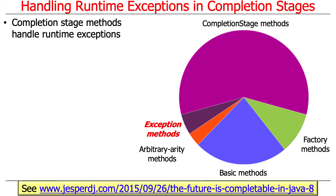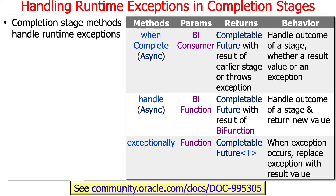Keep in mind the context here is handling exceptions that arise in completion stages. I assume you know how to handle exceptions in normal synchronous programming. This is how to handle runtime exceptions in completion stage methods that are running asynchronously. There are several different variants: whenComplete and handle async, which have an async variant that will run things in another thread in the worker pool, and a non-async version that typically runs in the same thread that just finished the previous stage.